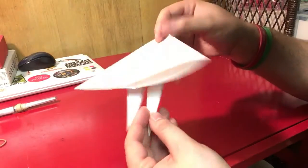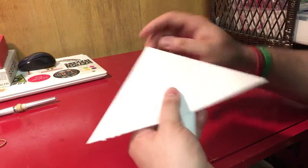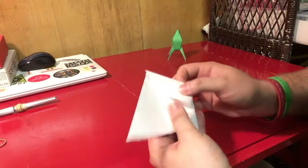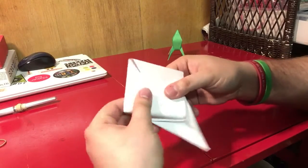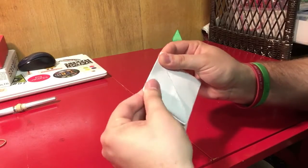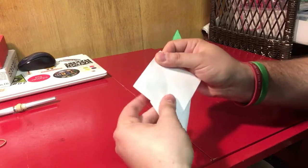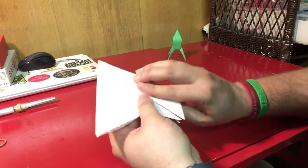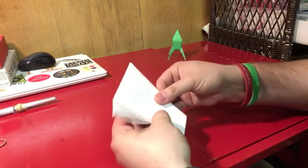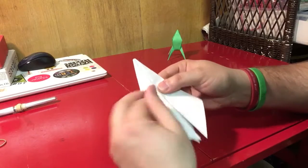Flip the whole model over to the back side. Take your points and fold them to the top. One and two. Unfold and fold them to the bottom. One and two.